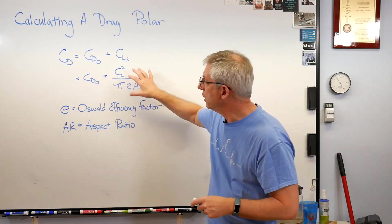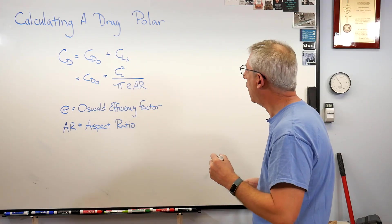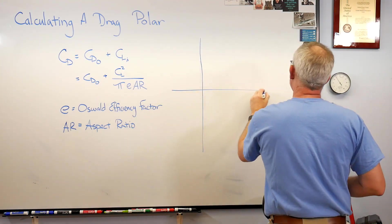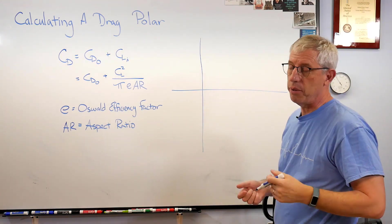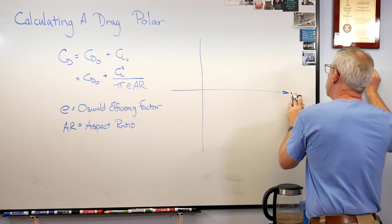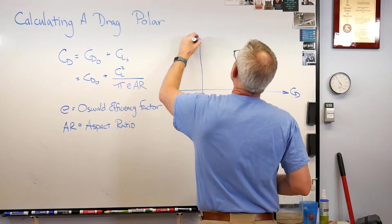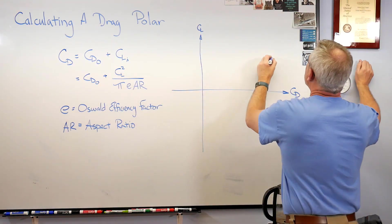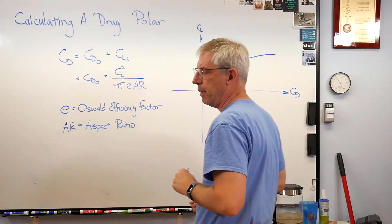When you plot this out, it's going to look like this. Now when you think parabola, you think of something that looks like that. For historical reasons I guess, drag is usually plotted on the horizontal axis and lift is on the vertical axis, just like that. And so your drag polar looks like that.